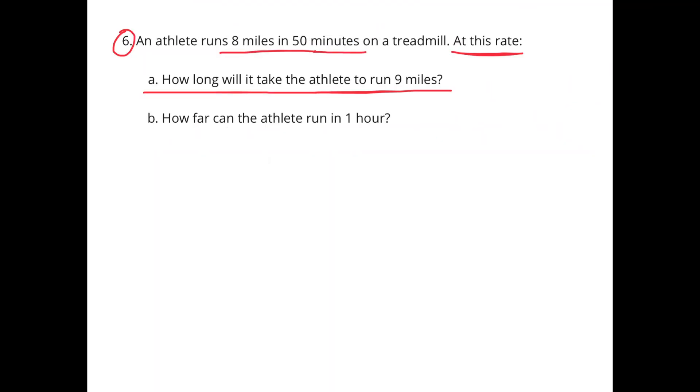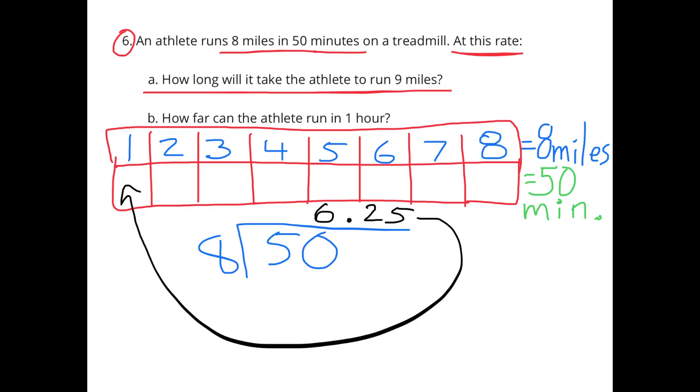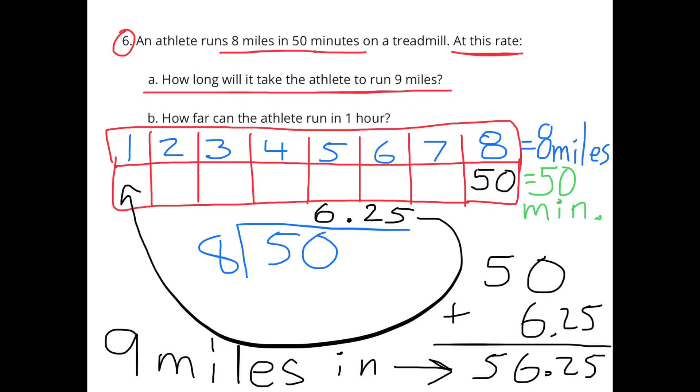Number 6: An athlete runs 8 miles in 50 minutes on a treadmill. At this rate, how long will it take the athlete to run 9 miles? I made a tape diagram, and on the top, I represented 8 miles. And on the bottom, I represented 50 minutes. 50 minutes divided by 8 miles equals 6 and a quarter minutes. Each mile will take 6 and a quarter minutes. We know it takes the athlete 50 minutes to run 8 miles. And we know that athlete can run each mile in 6 and a quarter minutes. So just add 6 and a quarter to 50, and you will get 56 and a quarter minutes. The athlete can run 9 miles in 56 and a quarter minutes.